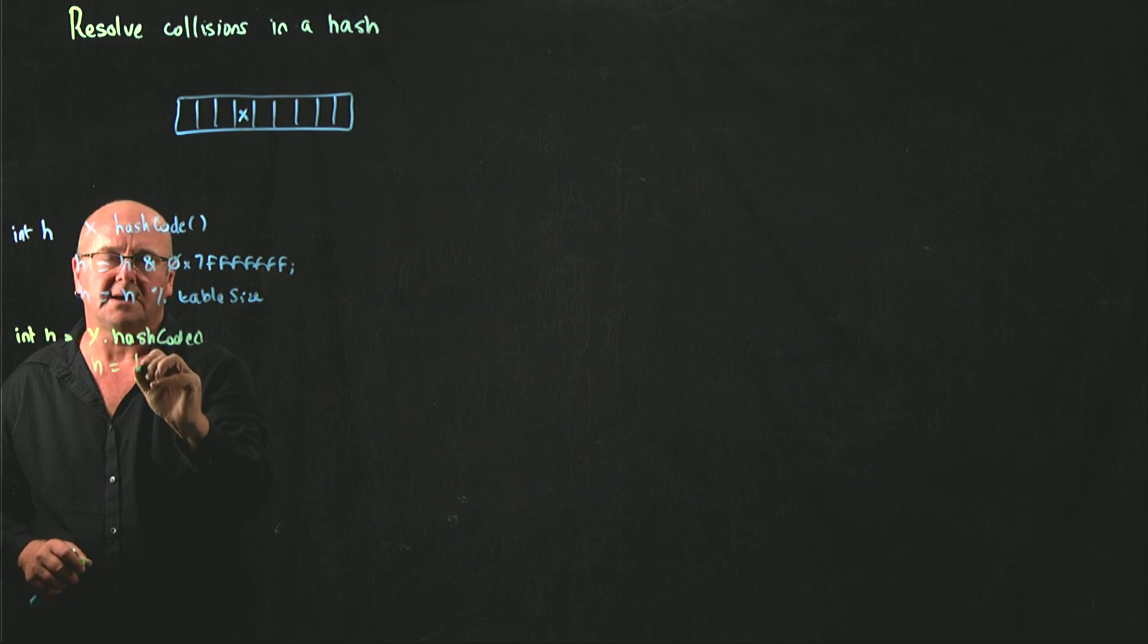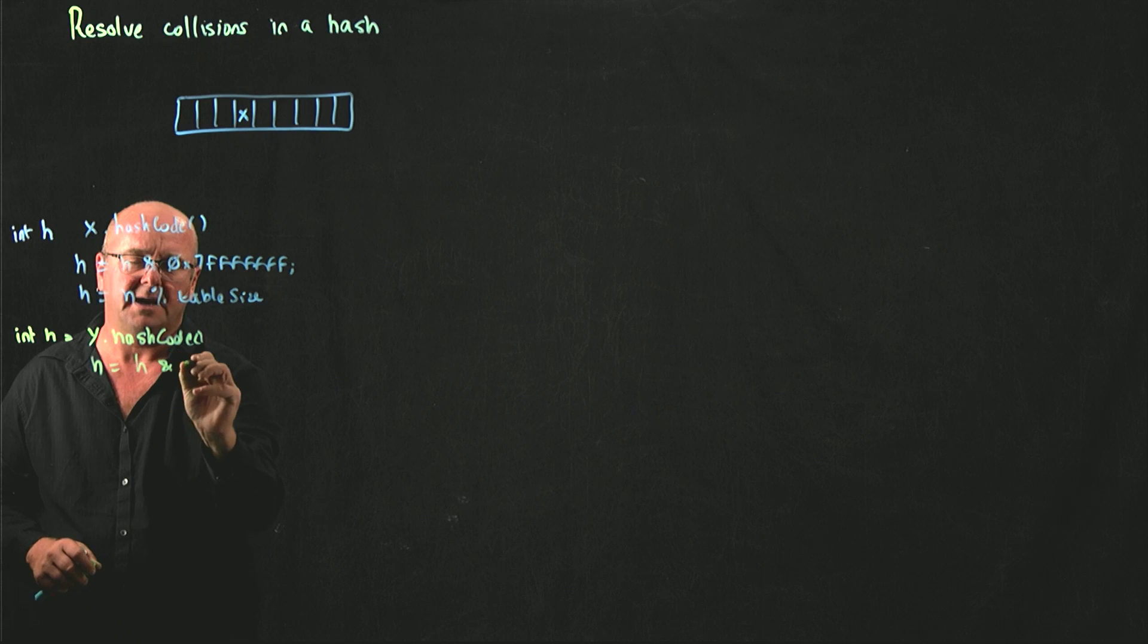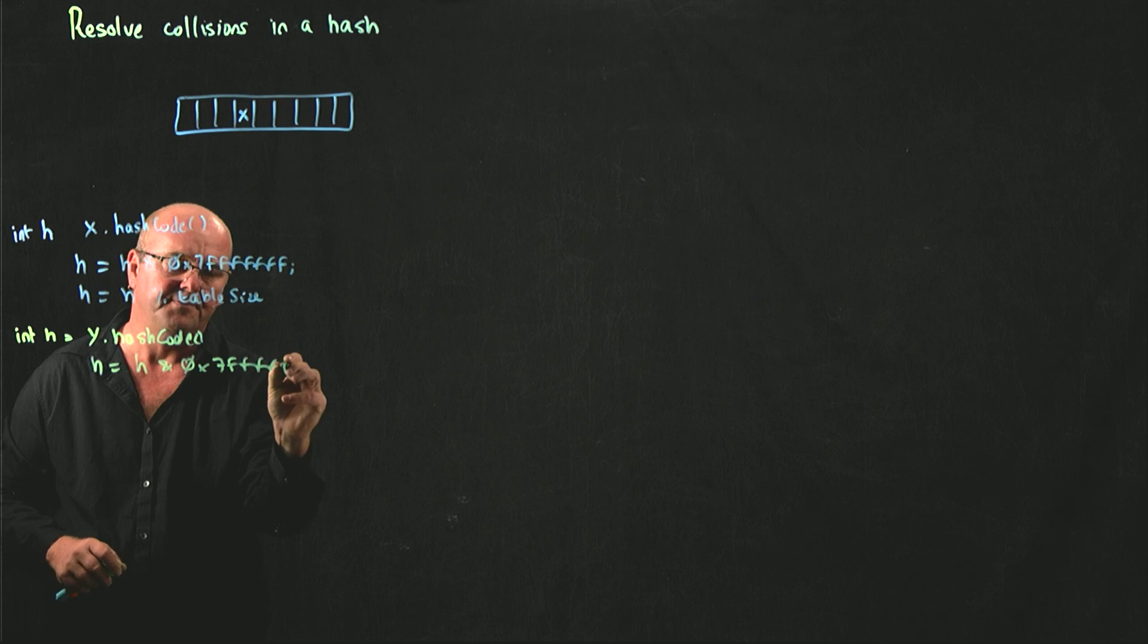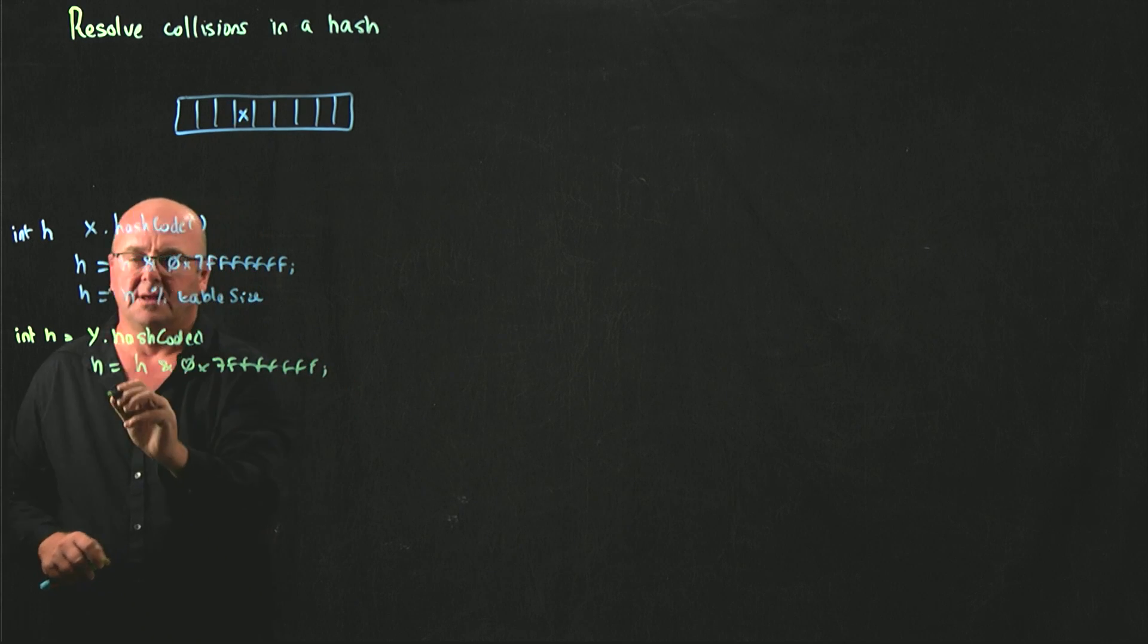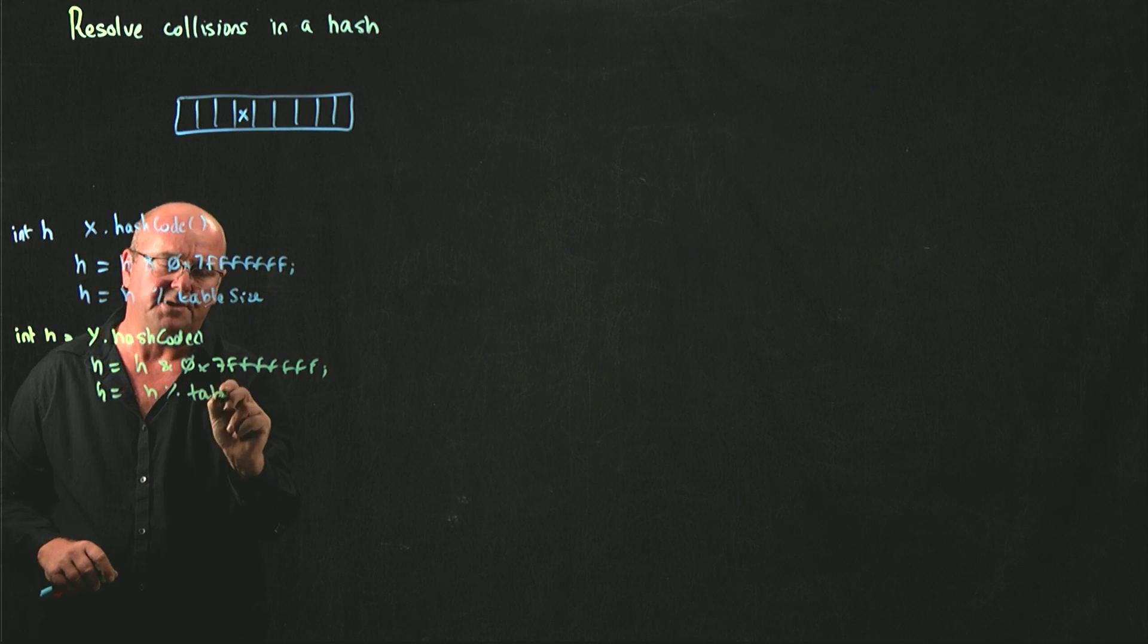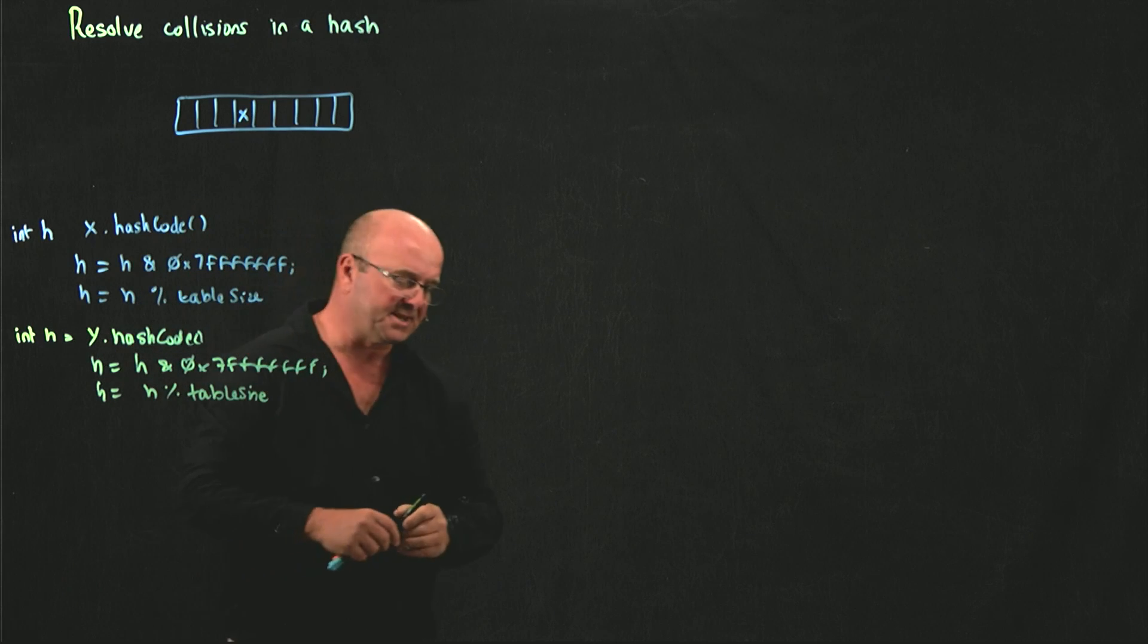We take our hashValue and we make it positive. We take our hashValue and we mod it on the table size.